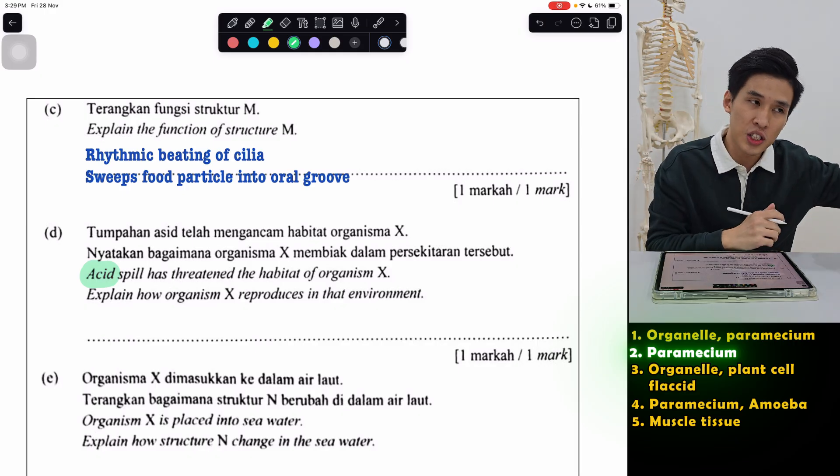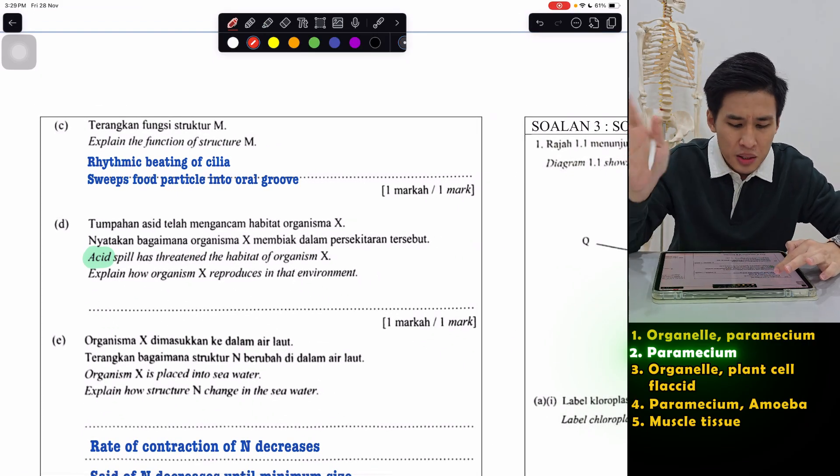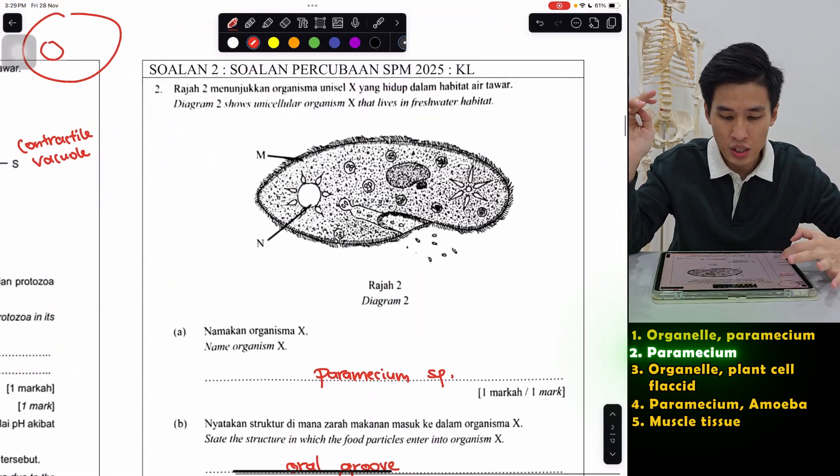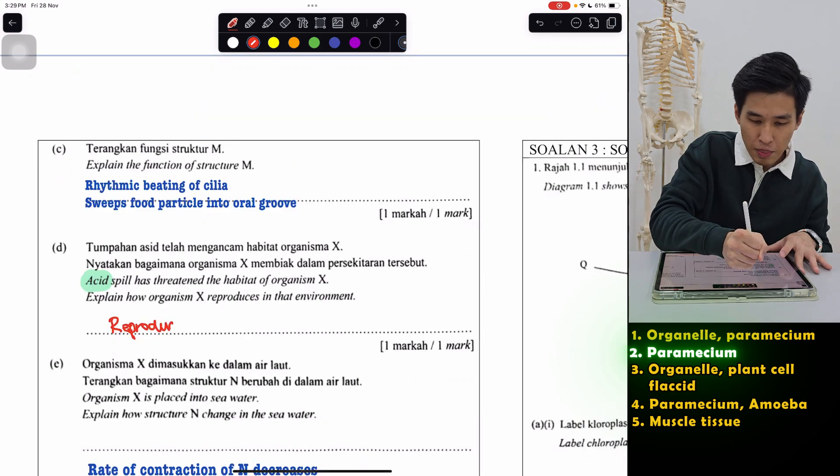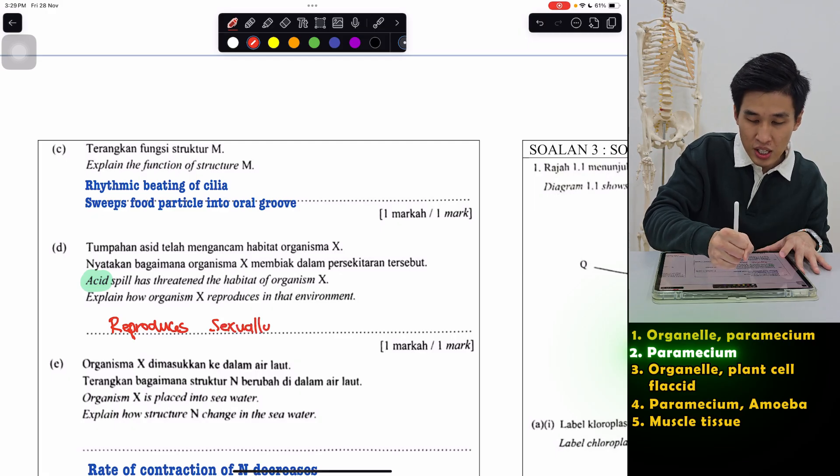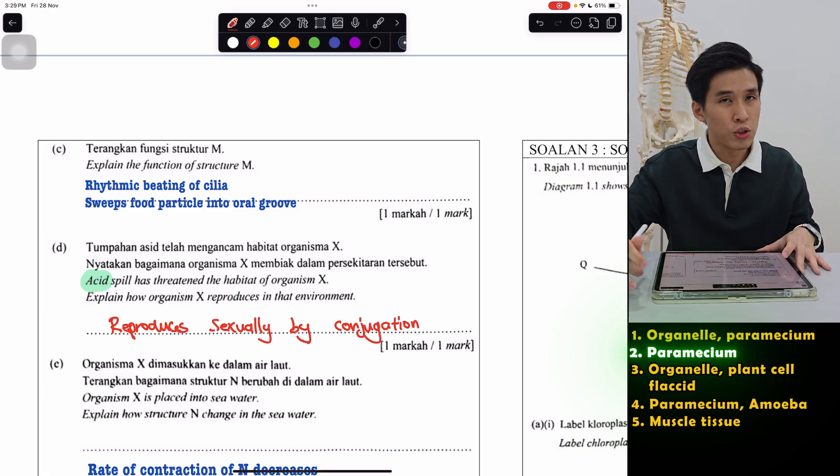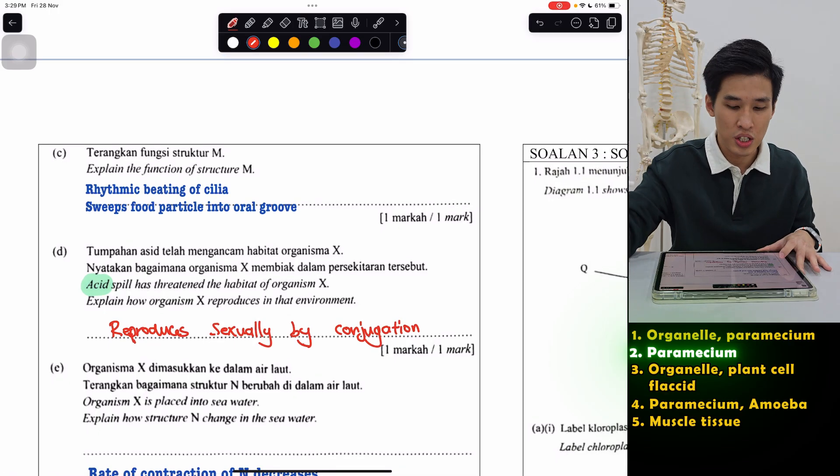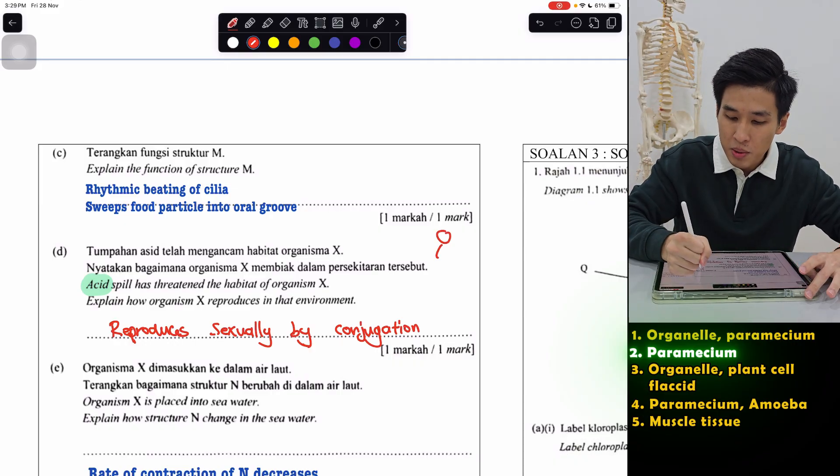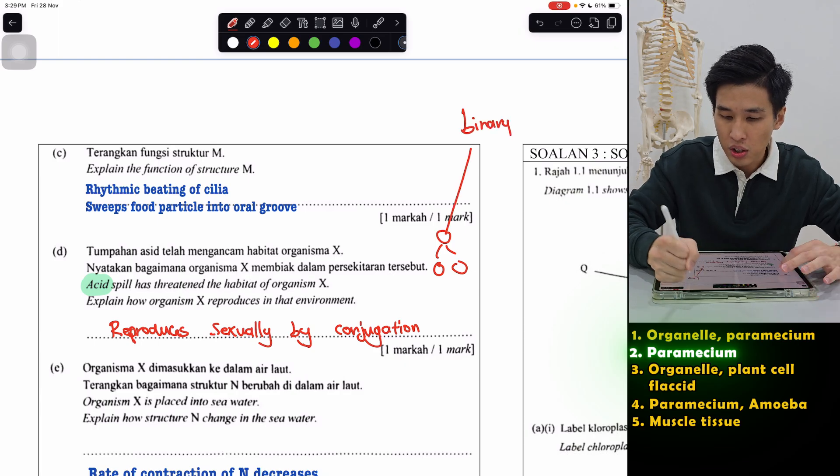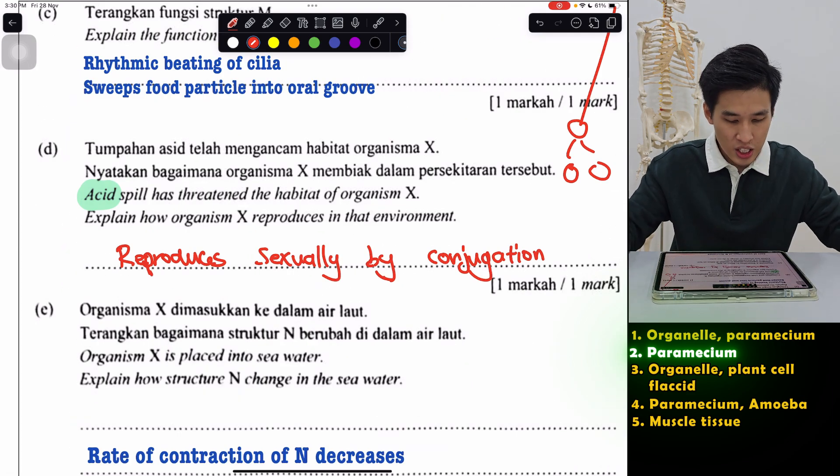So now it's not favorable, they don't like acid. No organisms like acid. Most organisms hate it. So how they will reproduce? It's through a sexual method called conjugation. Better to say sexually, but don't just say sexually. The main keyword is by conjugation. So conjugation is their type of sexual reproduction, when environment is not favorable they will reproduce like this. If it's favorable, like just like amoeba, they will just one split into two. Remember this is called binary fission.